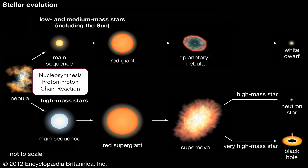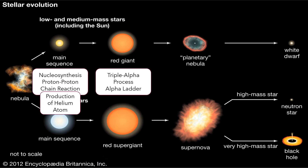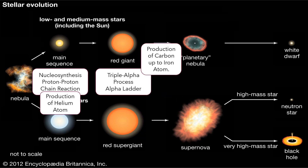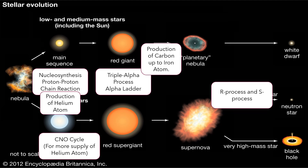During the main sequence star stage, nucleosynthesis and proton-proton chain reaction occur, forming helium atoms. This process continues until the formation of red giants, which conduct the triple alpha process and the alpha ladder, creating heavier elements such as carbon to iron. For high massive stars, the CNO cycle produces more helium, followed by the red supergiant and supernova, which involve the R process and S process, creating heavier elements such as uranium and thorium.